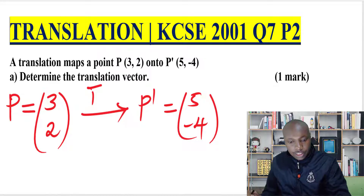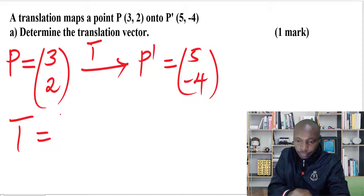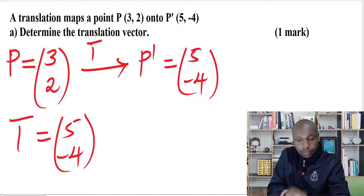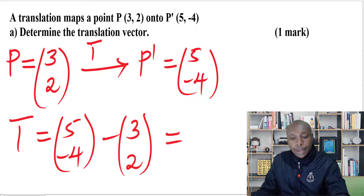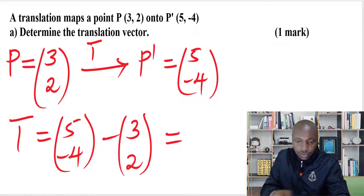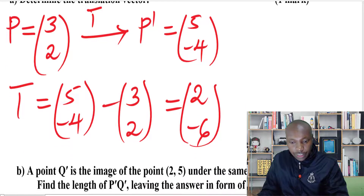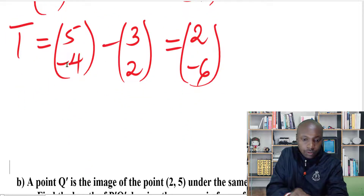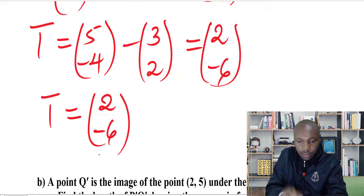Now to get the translation vector, we simply take the column vector for the image P', that is (5, -4), and subtract the column vector of the object, that is (3, 2). That is how we get the translation vector, because when translating a point you add the translation vector to get the image. So: 5 minus 3 gives 2, and -4 minus 2 gives -6. Therefore the translation vector is (2, -6).